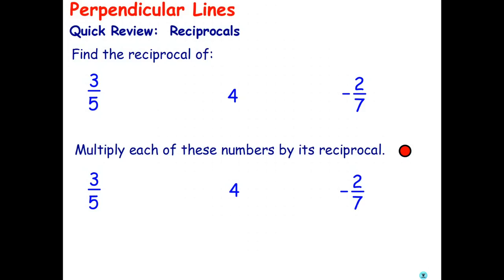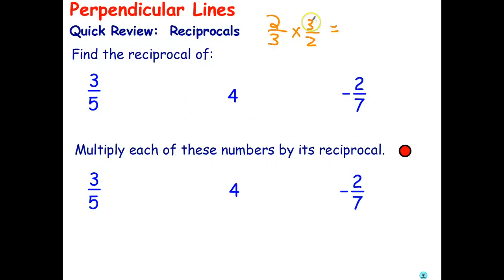The main feature of reciprocals — let me just write a fraction here like two-thirds. The main feature of reciprocals is if you multiply them together. The reciprocal of two-thirds means swapping the numerator and denominator, so the reciprocal of two-thirds is three-halves. And if you multiply reciprocals together — three times two is six, three times two is six — you always get one. So a number times its reciprocal equals one.